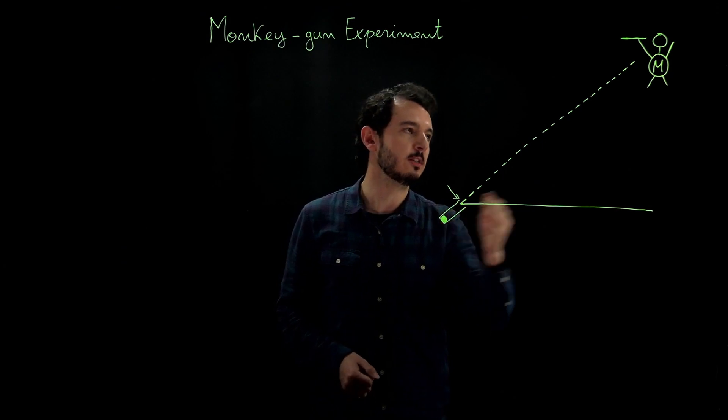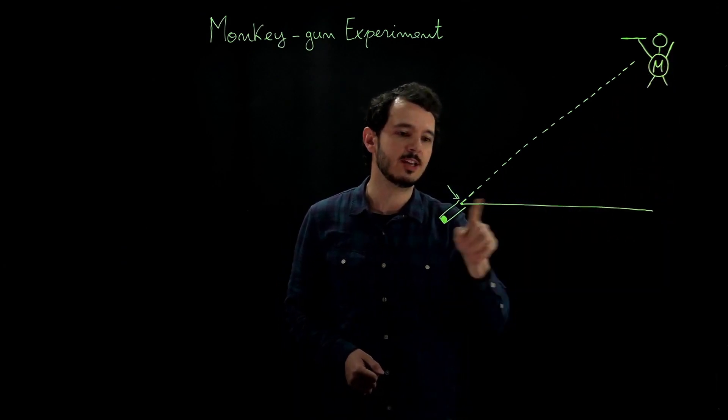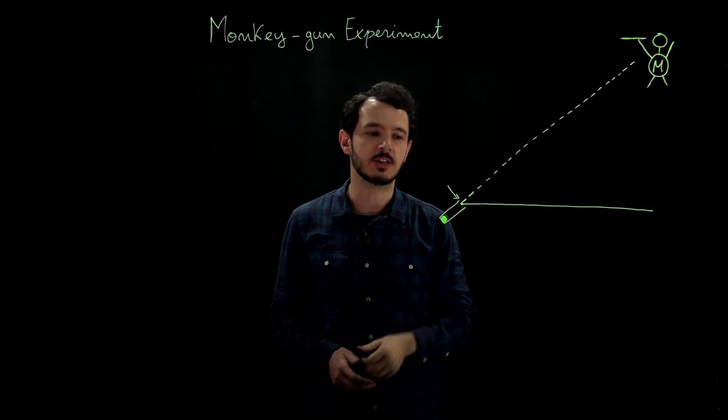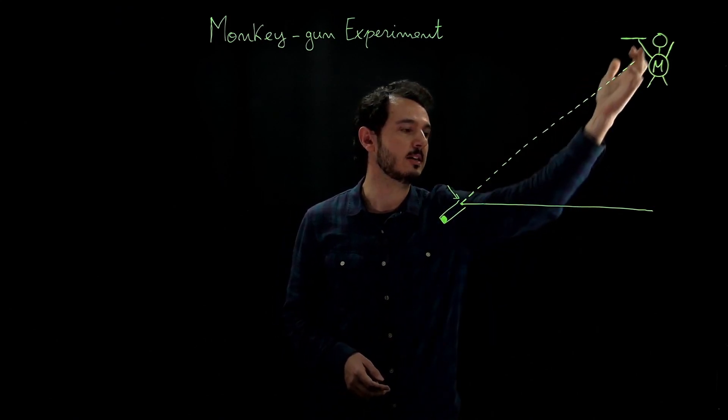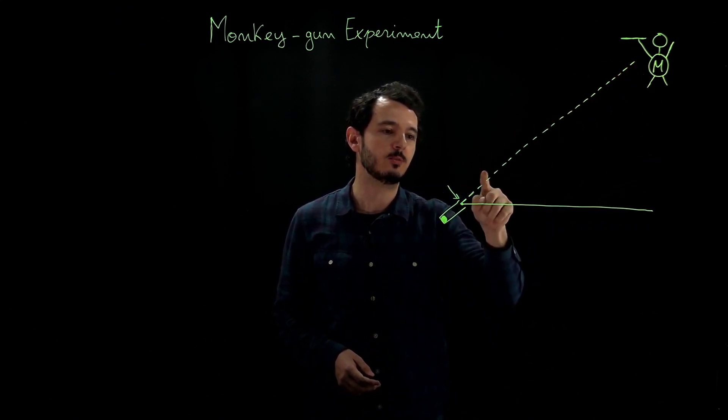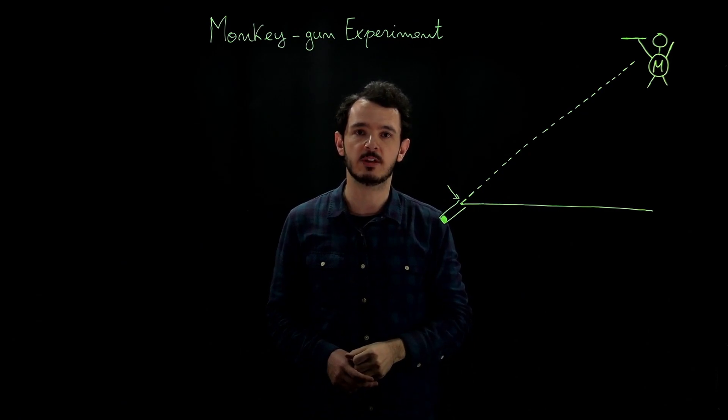With respect to this origin, the monkey is at an initial height of 2 meters and in a horizontal distance of 3.7 meters. Since the cannon is aimed at the monkey, you can calculate the angle at which it's aimed from that triangle to be 28.4 degrees.